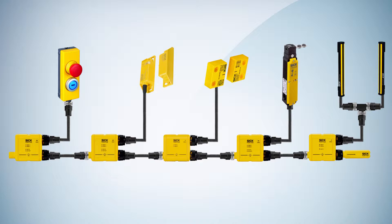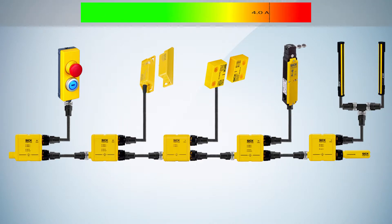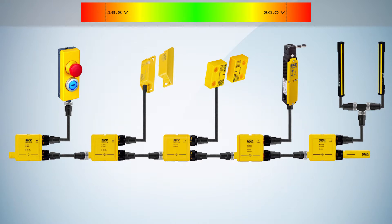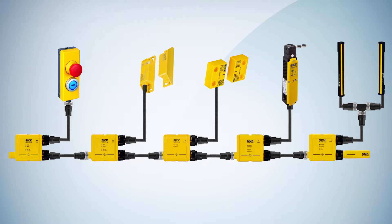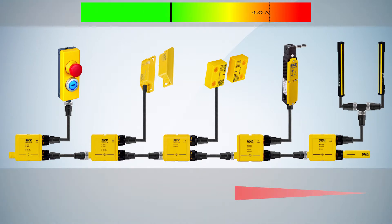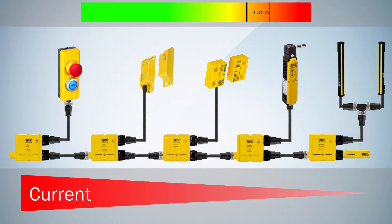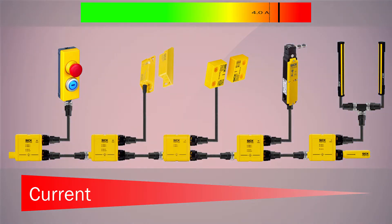Furthermore, the current and the voltage of every node have to be in a certain range. The current must not exceed the value of 4A, and the input voltage of each FlexiLoop node must be in between 16.8 to 30V. To calculate the current at a specific point of the cascade, you can simply add up the individual current values of the following devices, including the terminating element. If the current exceeds the value of 4A at any point, it reaches an unacceptable range.